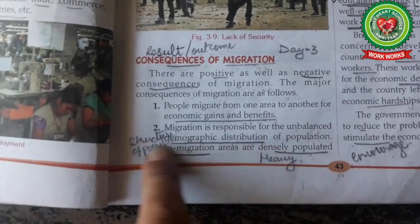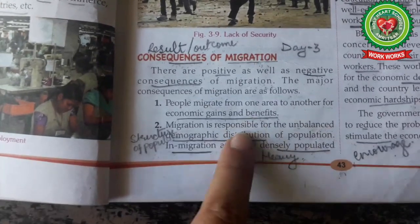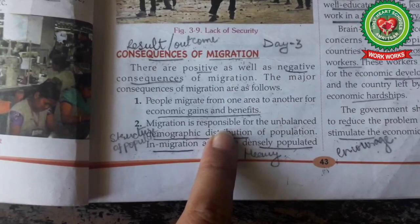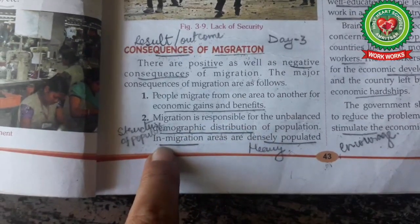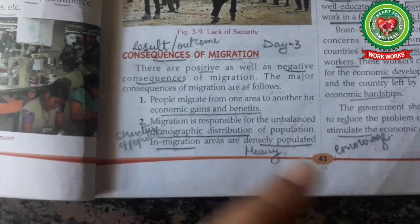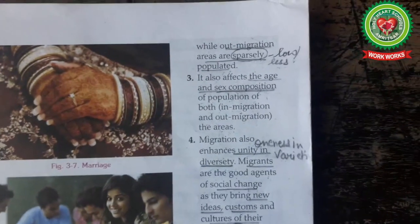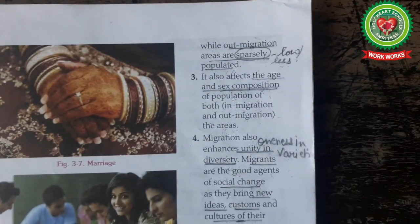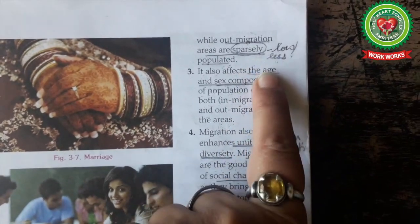Migration is responsible for unbalanced demographic distribution. Demographic distribution means the structure or size of the population. This is disturbed due to the consequences of migration because in-migration areas are densely populated, while on the other hand, out-migration areas are sparsely — or less — populated. Underline the word 'sparsely,' which means less or low.